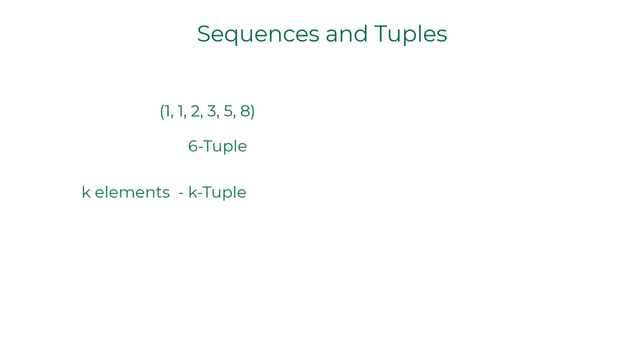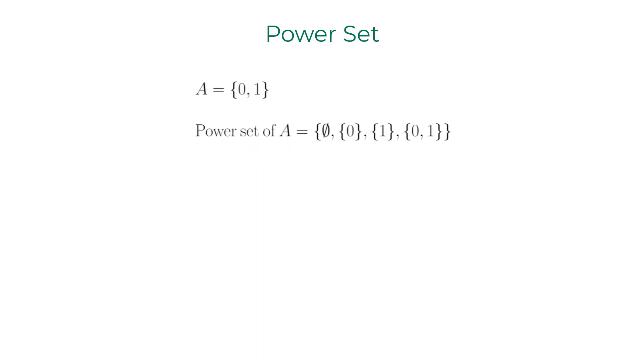Now pay close attention to the concepts I'll be introducing to you in a bit. Let's discuss about a power set. If A is a set with elements 0 and 1, the power set of A consists of the sets: empty set, set containing only 0, set containing only 1, and a set containing both 0 and 1.